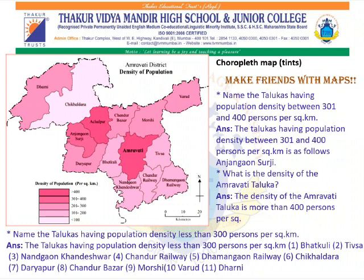Name the Talukas having population density less than 300 people per square kilometer. There are a number of Talukas with population density less than 300 people per square kilometer, that is: Bhatkuli, Divsa, Nandangao Kandeshwar, Chandur Railway, Dhamangao Railway, Chikhaldhara, Dariyapur, Chandur Bazar, Morshi, Varur and Dharmi.